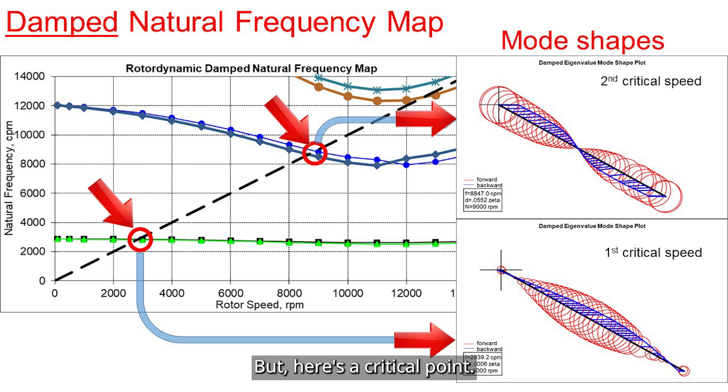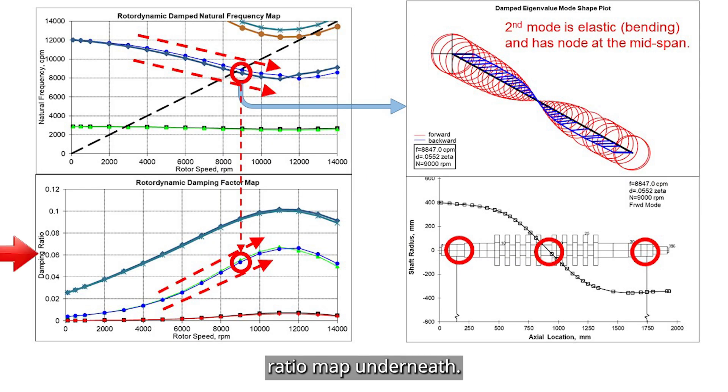But here's a critical point. Not all resonances are equally problematic. That depends on how well each mode is damped. So, to assess that, we look at the damping ratio map underneath.